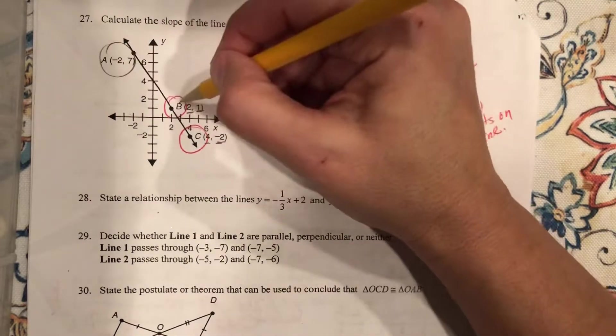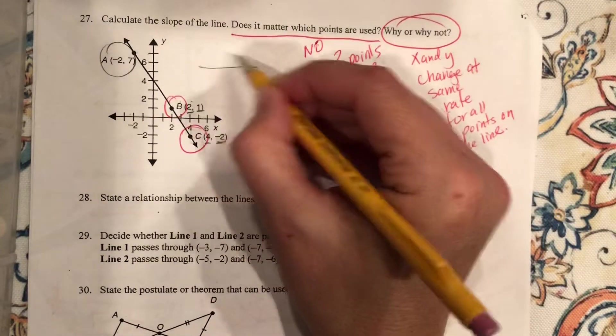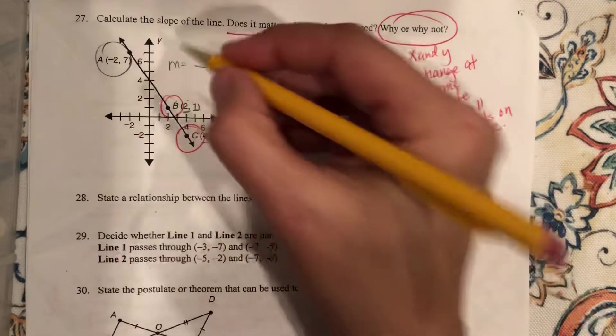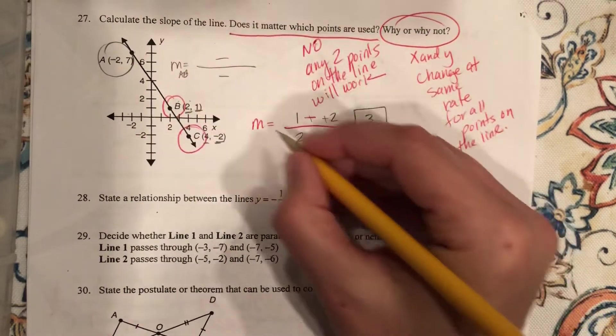Now, if I were to find the slope between this guy and this guy, let's just do it for funsies, because we like doing extra work. Let's do between A and B. Let's do the slope of A and B. I did BC here.